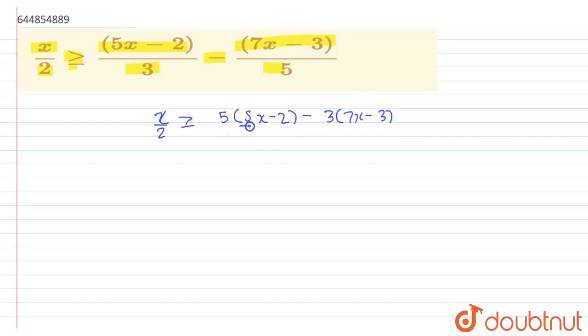Upon what is our LCM? 5 times 3 is 15. So if we further solve this, we will get x/2 which is greater than or equal to 5 times 5 is 25, so 25x minus 5 times 2 is 10, minus 7 times 3 is 21.